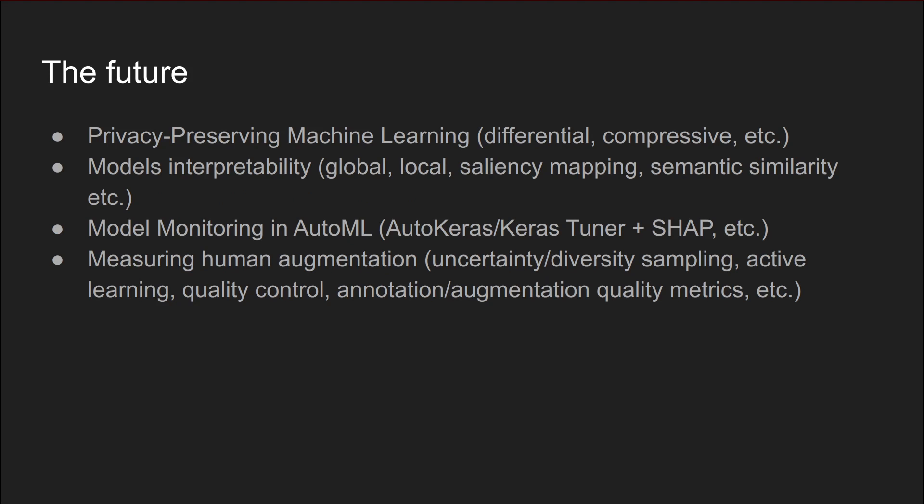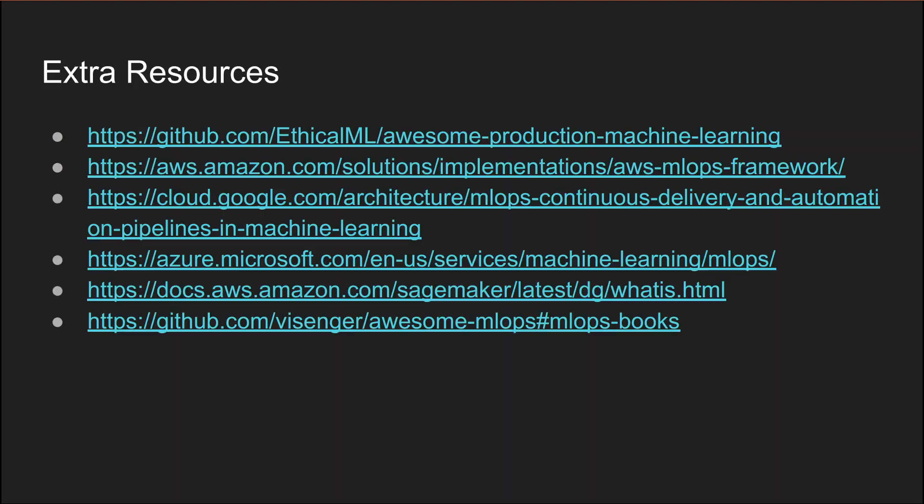Looking at the future, a lot of research is concentrated on privacy-preserving machine learning. Large research groups are also investing in model interpretability. Very promising is the future of AutoML, both in MLOps open-source frameworks and in cloud vendor implementations. Measuring human augmentation and deriving statistics from it also seems to be a very promising direction of MLOps development. You can see the list of extra resources at the end of this presentation. Thank you very much for your time.